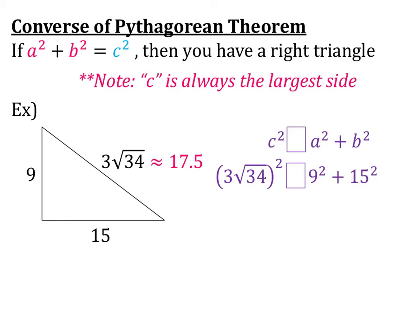So I have 3 root 34 squared, box, 9 squared plus 15 squared. So when we have a whole number and a radical combination to a power, we need to distribute that power. So when I'm evaluating 3 square roots of 34 squared, I'm going to do 3 squared and the square root of 34 squared. So 3 squared is 9, and then the square root of 34 squared, the square root and the square cancel out, so you're left with 34.